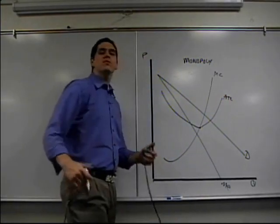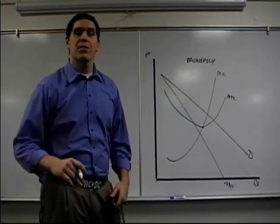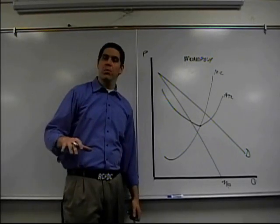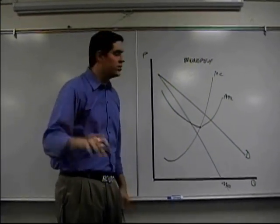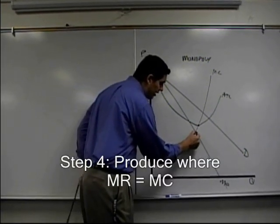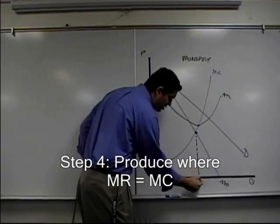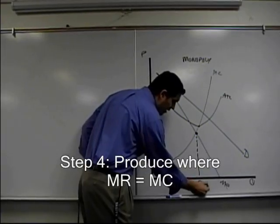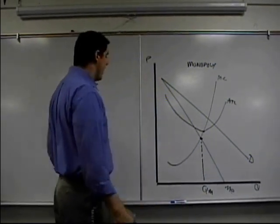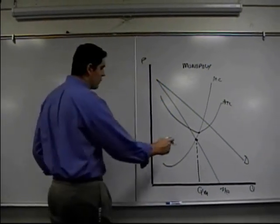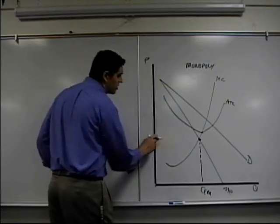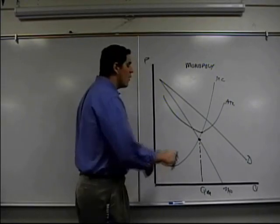The next step is to figure out how much do they produce. The rule you learned in perfect competition still applies — a firm produces where MR equals MC, right there. That's the quantity for a monopoly. Done. That's easy. Now you're tempted to think the price is right here — they're going to charge this price — and you'd be wrong. That's not correct.